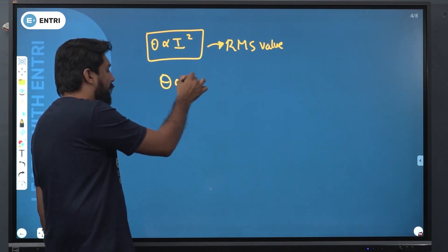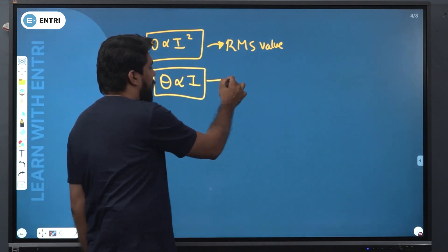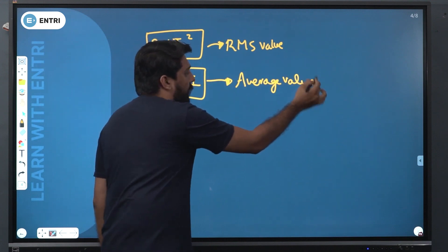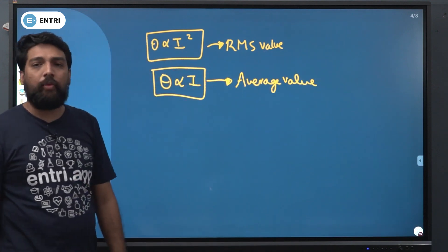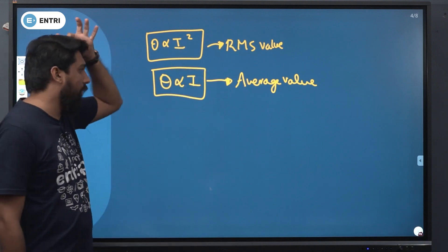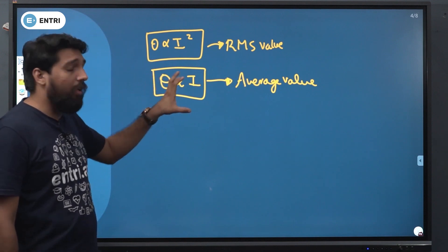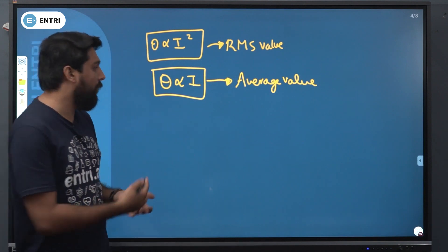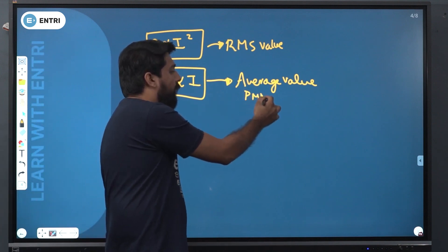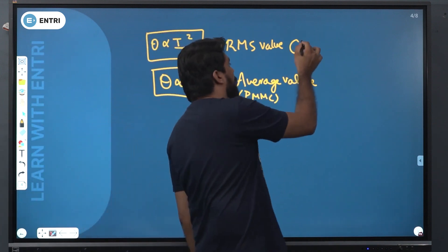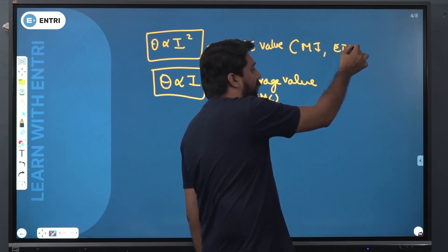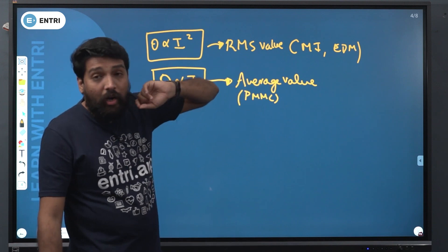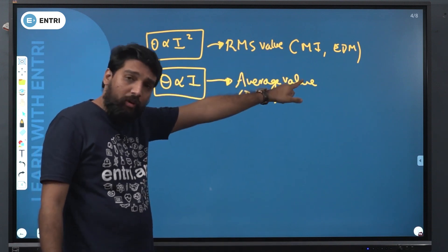Theta is proportional to I, so you will be getting an average value. The important points are: one is RMS and one is average value. For PMMC, the instrument gives the average value. For RMS, you can use the MI instrument and also the dynamometer. In this manner, the ammeter and voltmeter measure the RMS value.